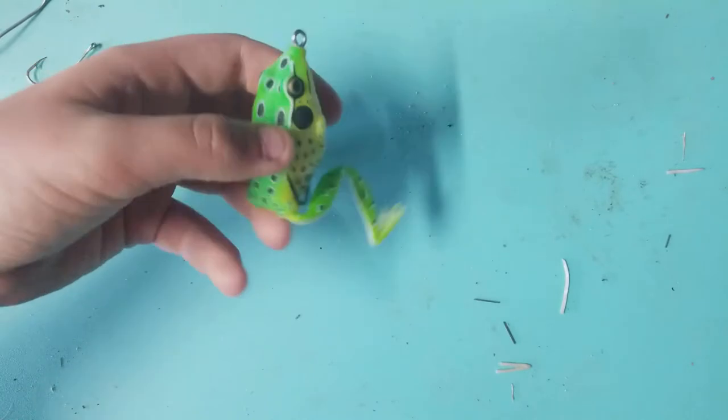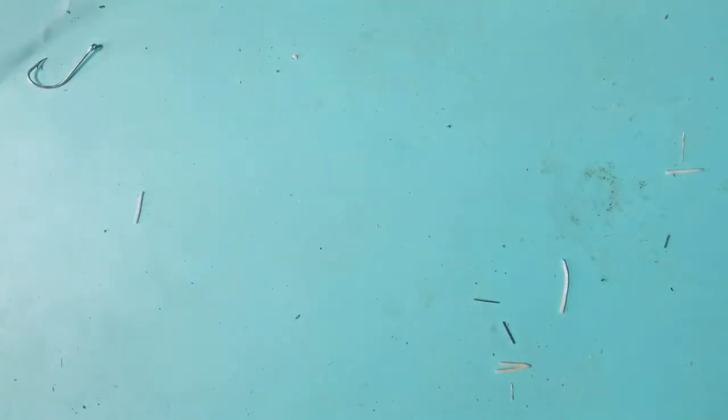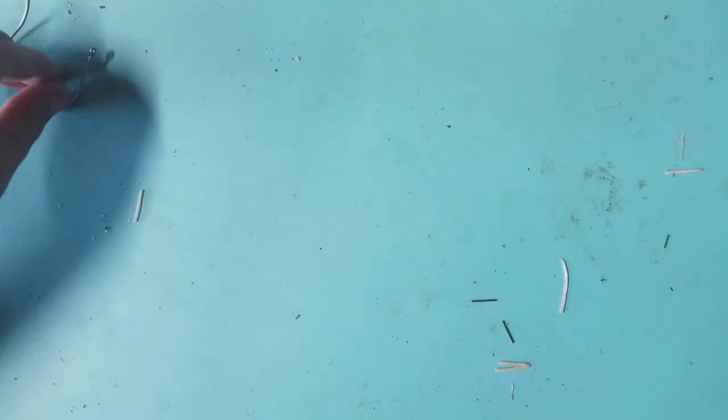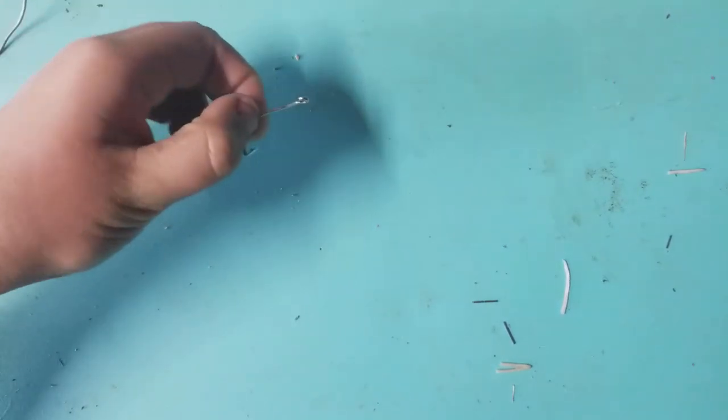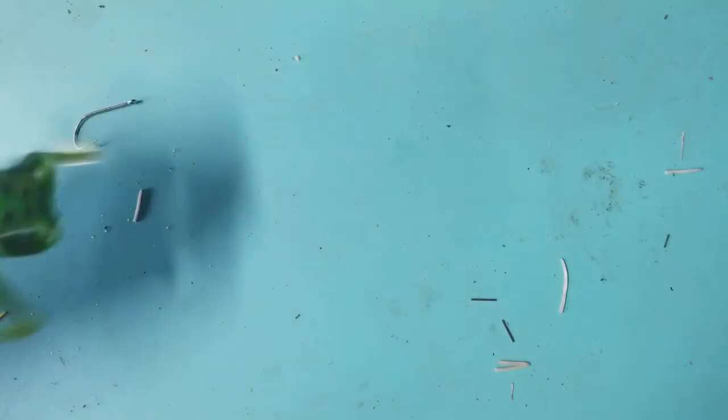First, what you need is a frog. I just chose a Lunker Hunt Lunker frog, but it can be any frog. A pair of pliers, a hook, and a thin piece of wire. So let's get started.